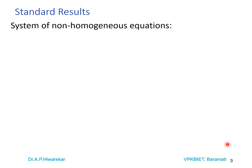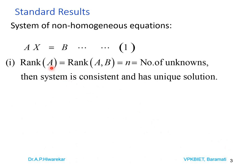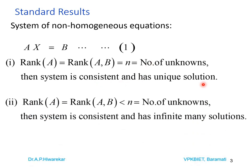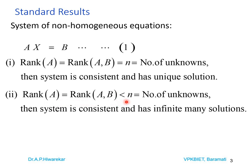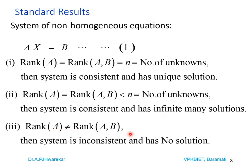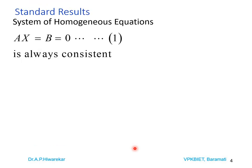For a non-homogeneous system Ax = b, we find the rank by reducing to echelon form. If rank(A) = rank(A|b) = n (number of unknowns), the system is consistent and has a unique solution. If rank(A) = rank(A|b) < n, the system is consistent and has infinitely many solutions. If rank(A) ≠ rank(A|b), the system is inconsistent and has no solution.